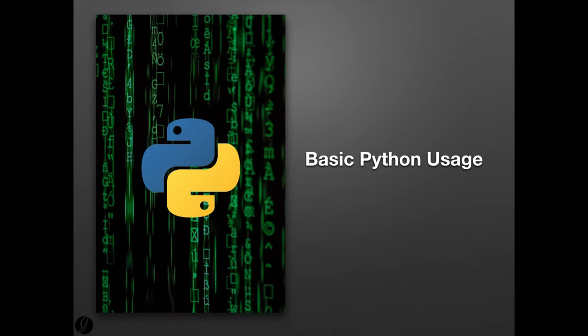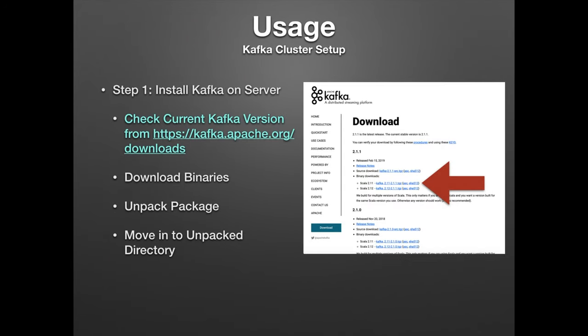At this point, you should be fairly comfortable with the different topics of Kafka, how they work, and who uses Kafka. Let's take a look at how to make a very basic Kafka setup. We'll do this in Python since it's such a popular language and it's very verbose. However, Kafka is written and optimized for use with Java. To start out, go to the Kafka download website and check on the current version — as of this recording, the current version is 2.1.0.